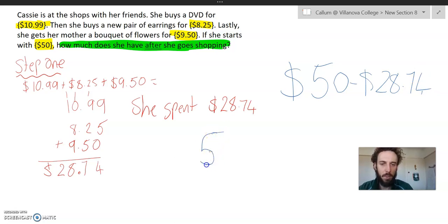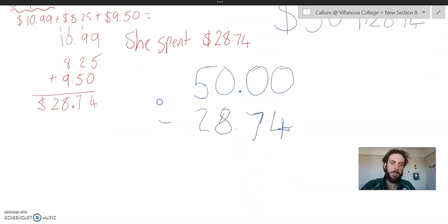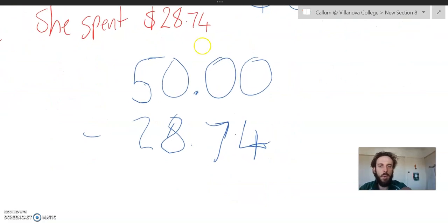Now, in terms of turning that into an algorithm, I know $50 can be written as $50 and no cents. And I'm taking away the smaller number. I'm going to put $28. My stylus is being weird, and 74 cents. And I've got as a nice algorithm, all my place values are neatly aligned. So I can do this now. 0 take away 4, you can't do. 0 take away 7, you can't do. 0 take away 8, you can't do. So we did learn a strategy for how we can do this back in term 1.